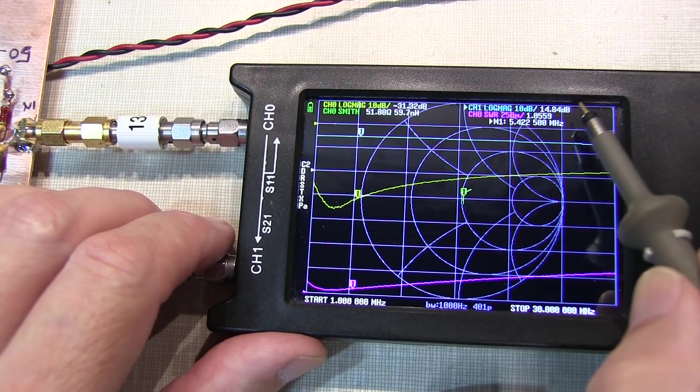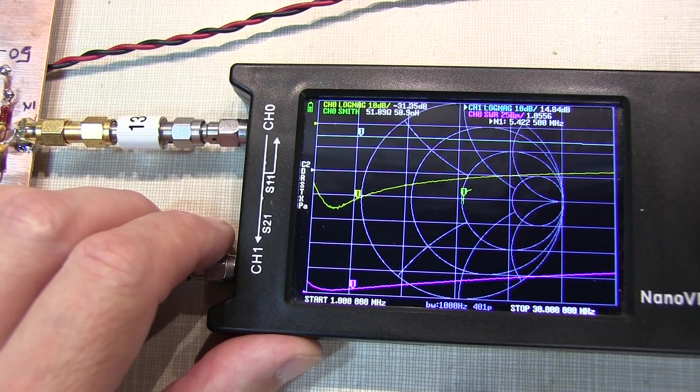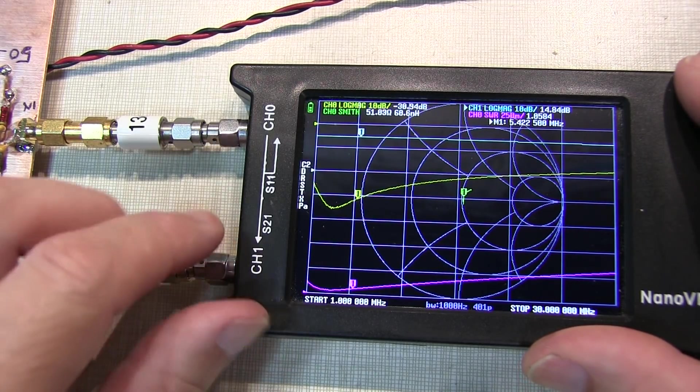If we look at the marker, we're looking at about 14.84 dB. We expected this to be about a 15 dB amplifier. It's not inconceivable that I've got a few tenths of a dB loss in my connections.